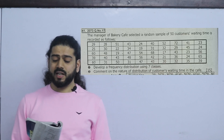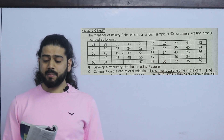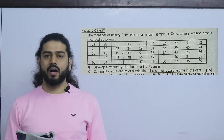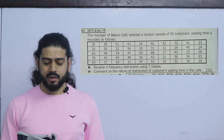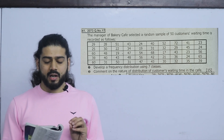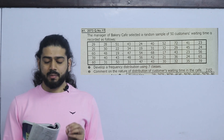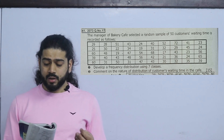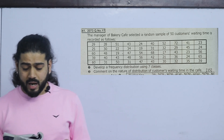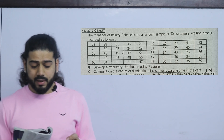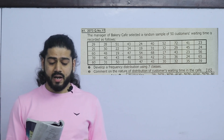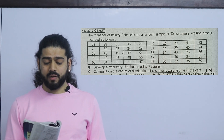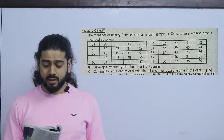The manager of a bakery café selected a random sample of 50 customers; waiting time is recorded as follows. It is the recorded time for the bakery café. The customer has to wait for many minutes. The waiting time values include: 29, 28, 51, 43, and 25 — there are about 50 data points.